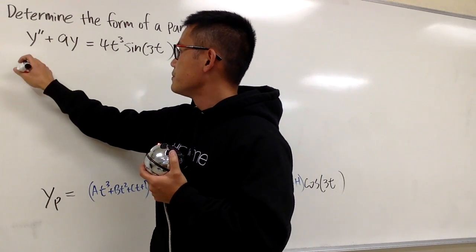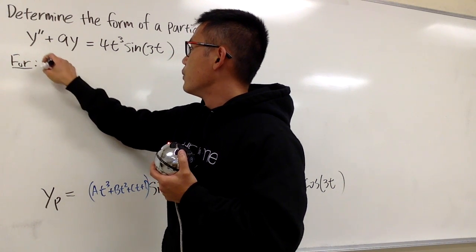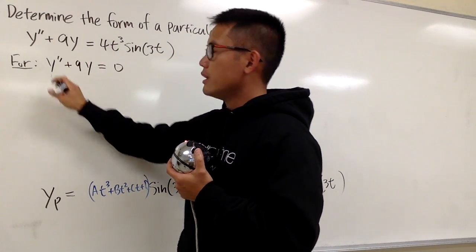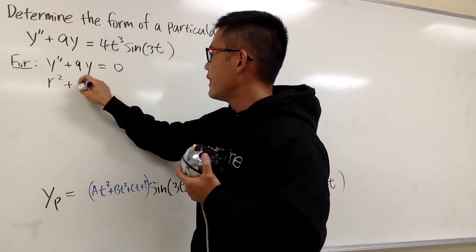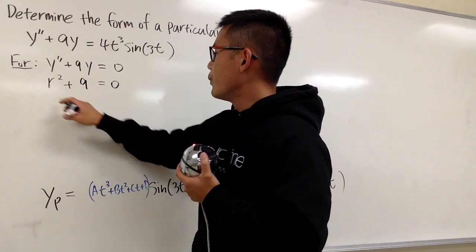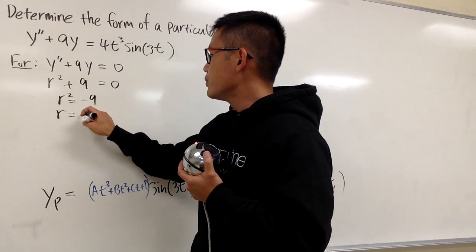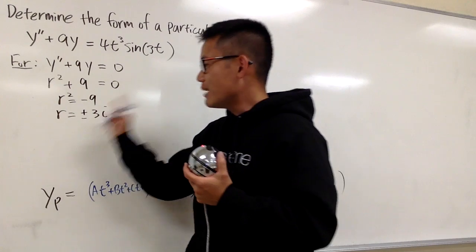So I have to check for yh. Let me just say 4y double prime plus 9y equal to 0. And I'll change this to r squared plus 9 equals to 0. Well, r squared is equal to negative 9. That means r is equal to plus minus 3i. Complex root, huh?